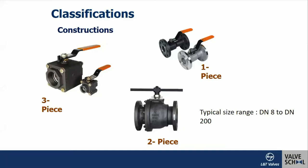Single-piece construction is the most prominent construction, having minimum leakage paths. It is good for gas applications because it has no potential leakage path other than the joint between the pipeline flange and the body flange. Two-piece construction has one body with an integral flange and another connector bolted together.